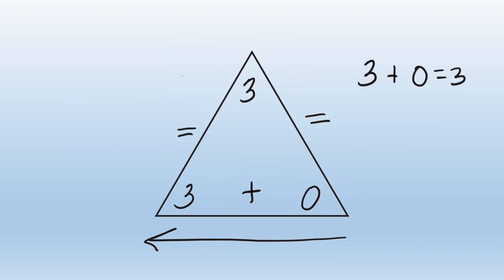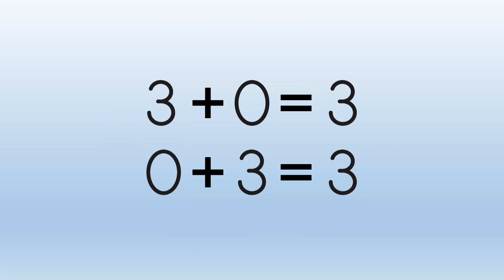He started on the other side and did the same thing. Zero plus three equals three. Joey now had two addition facts.